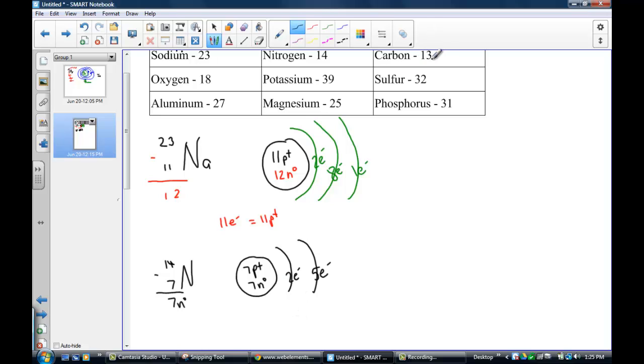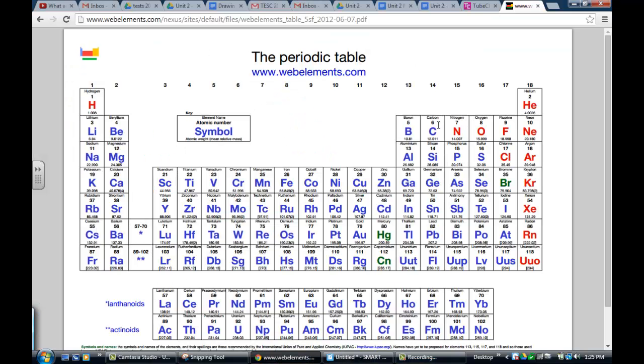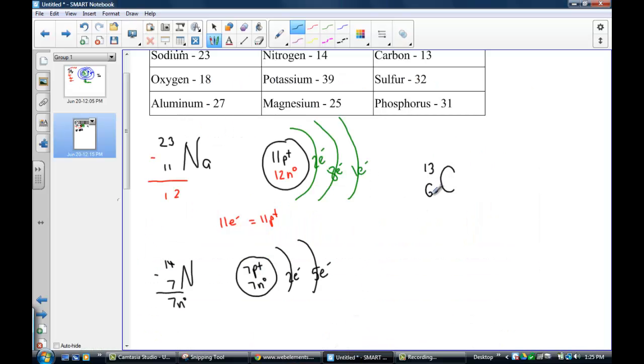The next one we're looking at is carbon with a mass number of 13. Carbon with a mass number of 13, what is its atomic number? Well, here it is, its number six. So here we can find six as its atomic number.